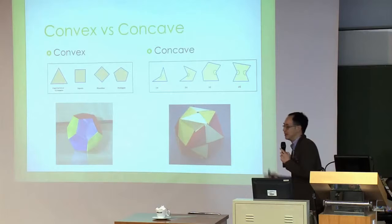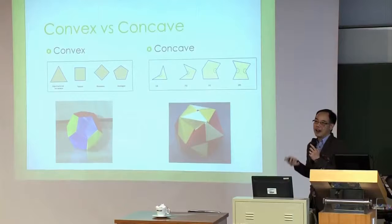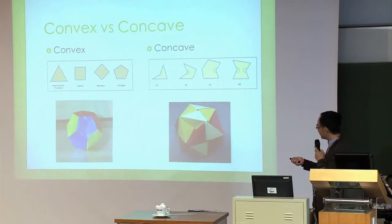We can apply the same concept to 3D polyhedra. For example, one that looks like a ball shape is convex. Another one - if you look deeper, you'll see there's actually a cavity there, a hole. So that one is a concave polyhedron.